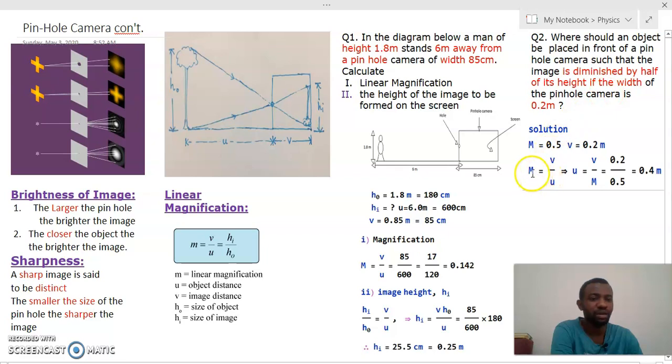Our magnification is v/u. We make u the subject, which is the object distance where the object should be placed in order to produce this magnification of 0.5. We make u the subject, we have v/m. Then we divide 0.2 divided by 0.5, and that gives us 0.4 meters, and that is our answer.